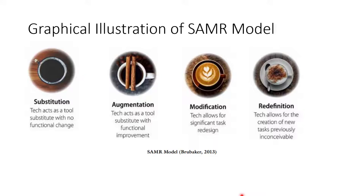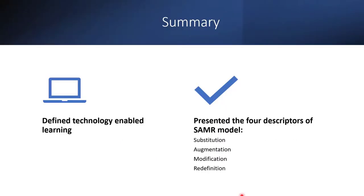You didn't have the task in mind, but this technology has come to redefine it totally. So we have these four for substitution, augmentation, modification, and redefinition — these are the SMART model descriptors guiding the usage of technology in blended learning. In summary, we have looked at the definition of technology-enabled learning and presented the four descriptors of the SMART model.